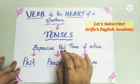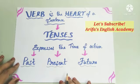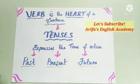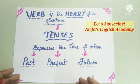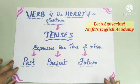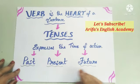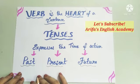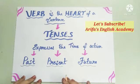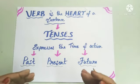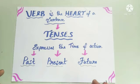Now, coming to tenses — what are tenses? Tenses express the time of action: how the action is done and when the action is done. Tenses are divided into three parts: past, present, and future. Past tense means something that has already happened. Present tense means something that is going on now. Future tense refers to things which are going to happen, which we cannot predict.